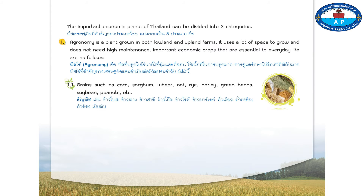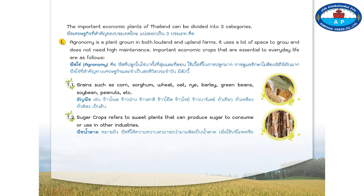Number one, agronomy refers to plants grown in both lowland and upland farms. It uses a lot of space to grow and does not need high maintenance. Important economic crops include: one point one, grains such as corn, sorghum, wheat, oat, rye, barley, green beans, soybeans, peanuts, etc. One point two, sugar crops refers to sweet plants that can produce sugar to consume or use in other industries.